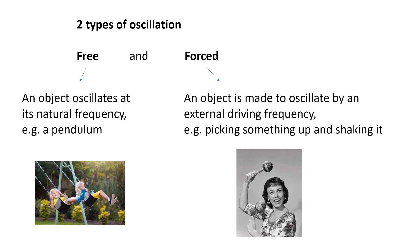Two types of oscillation. We have free oscillations and forced oscillations. A free oscillation is where you get it oscillating and then there are no external forces acting on it — it just oscillates. For example, a kid on a swing: give them a push and, like a pendulum, they will oscillate at their natural frequency. If it's a pendulum, T equals 2π√(L/g). If it's a mass on a spring, T equals 2π√(m/k). There's nothing making it oscillate; it is oscillating at its natural frequency.